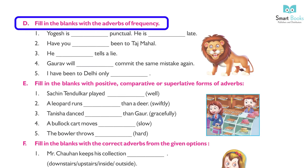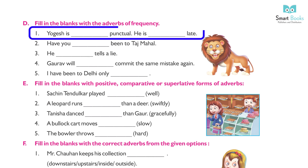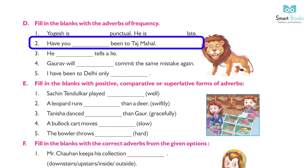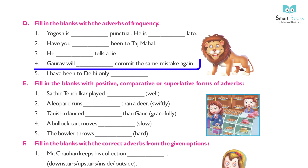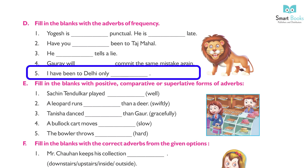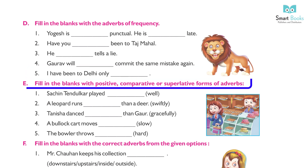Fill in the blanks with an adverb of frequency. 16. Yogesh is always punctual. He is never late. 16. Have you ever been to the Taj Mahal? 17. He frequently tells a lie. 17. Gaurav will commit the same mistake again. 17. I have been to Delhi only once.